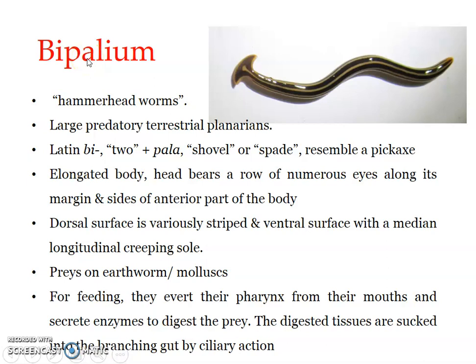The genus includes large predatory terrestrial planarians. Predatory in the sense that they prey upon earthworms; some other species prey upon molluscs. This particular Bipallium is very common in Kerala and the surrounding area — we can find it in moist soil, slithering around.